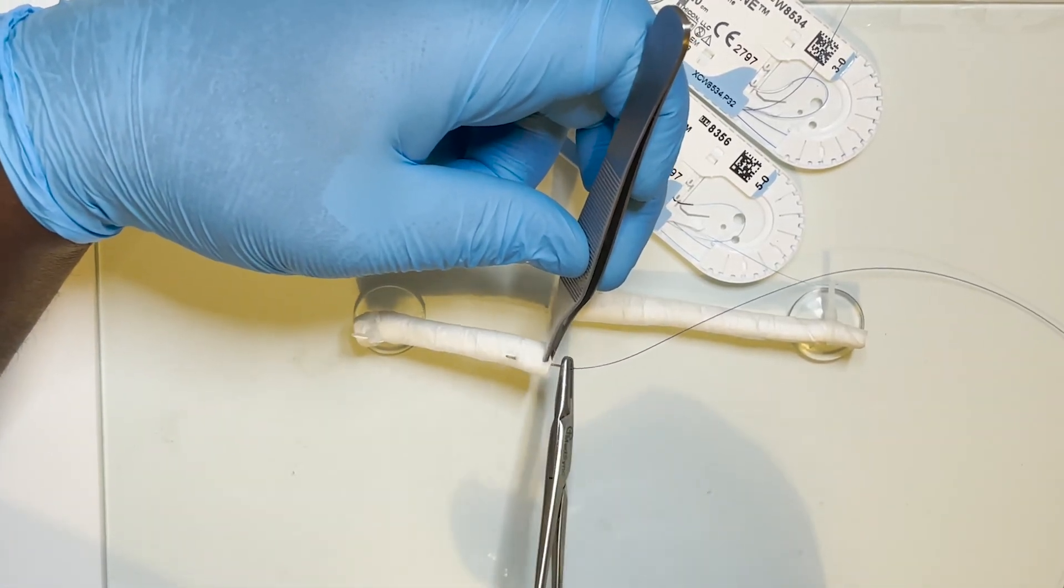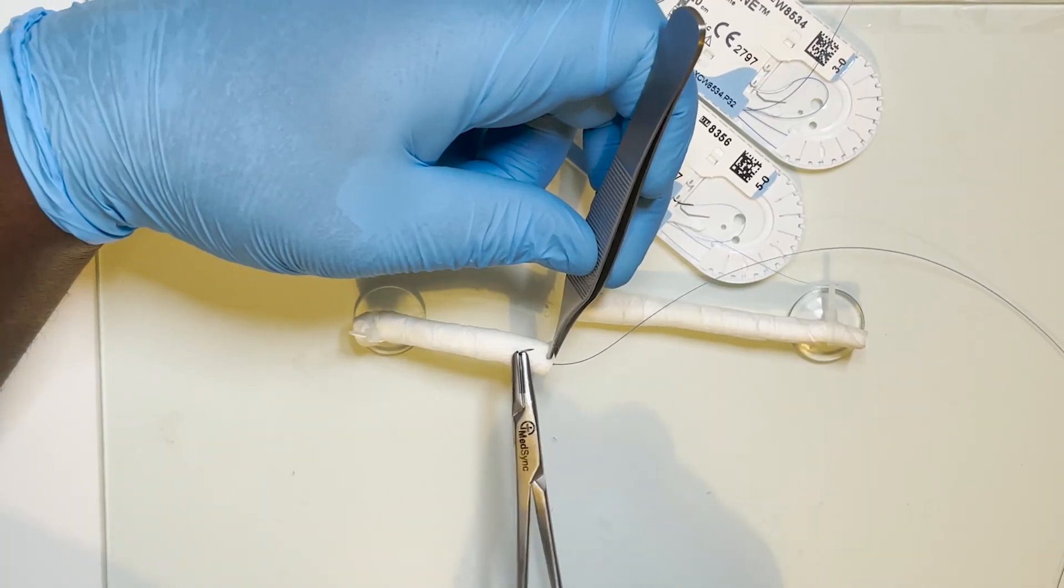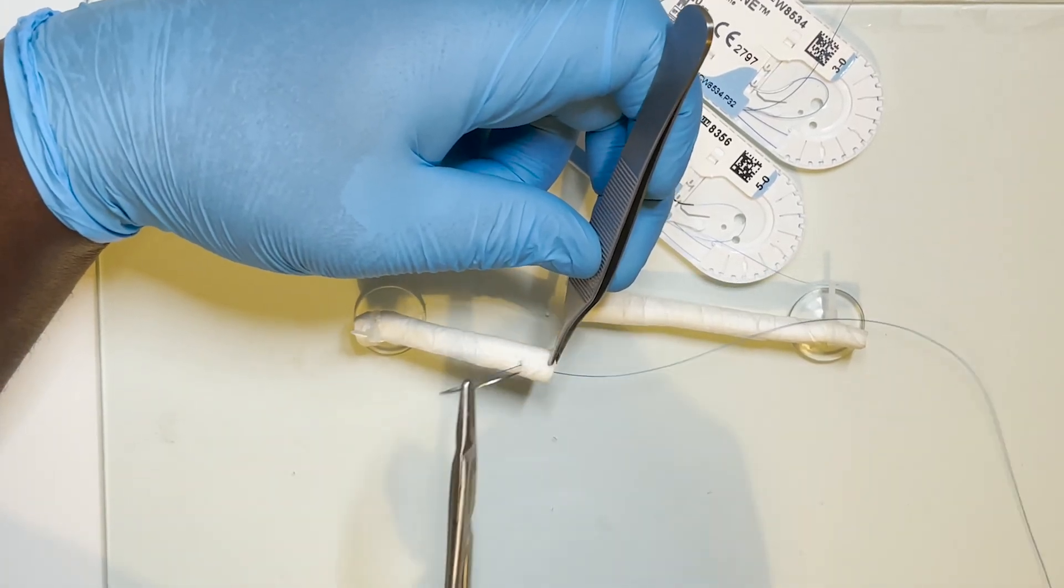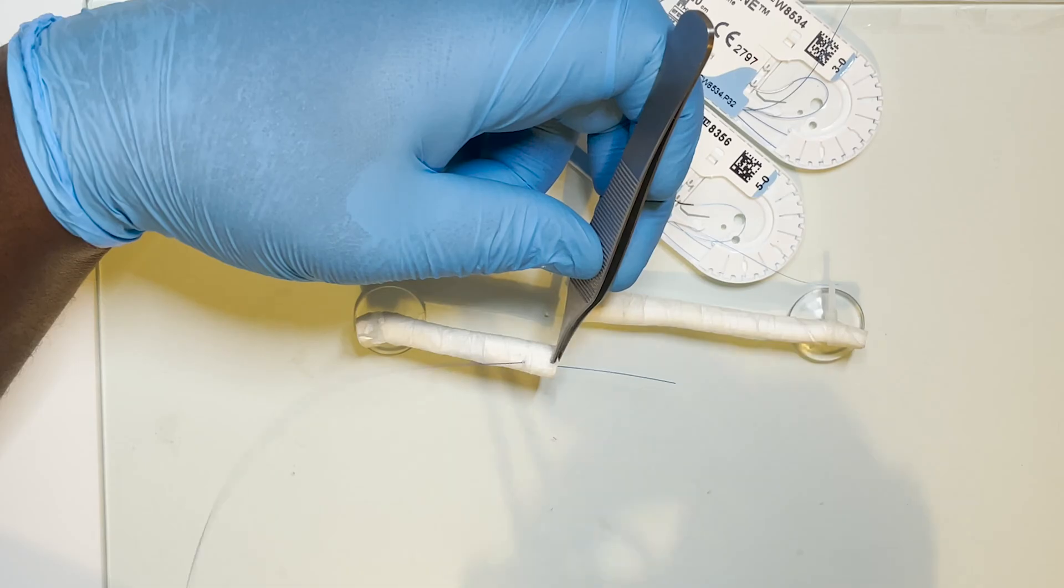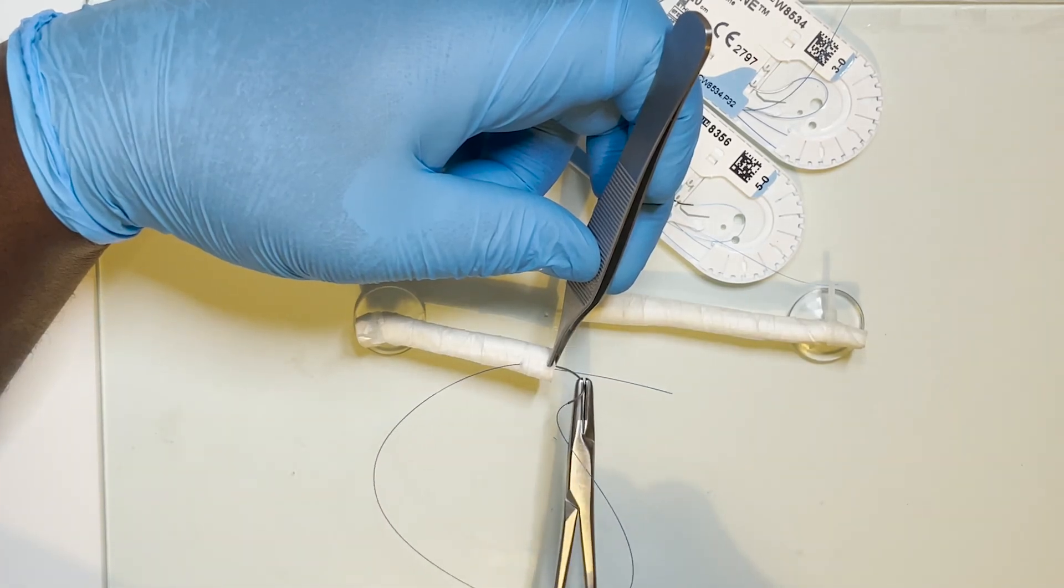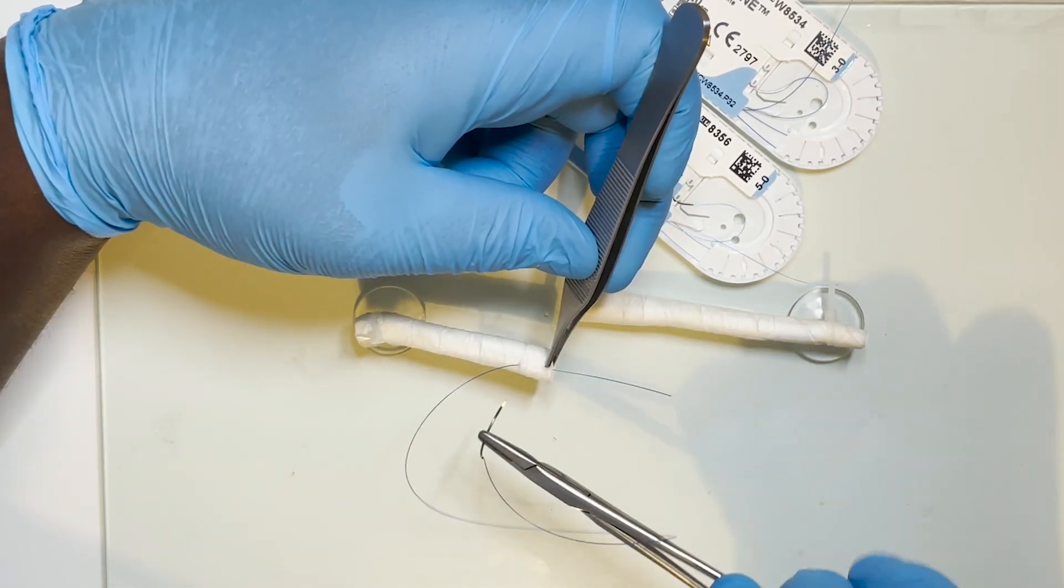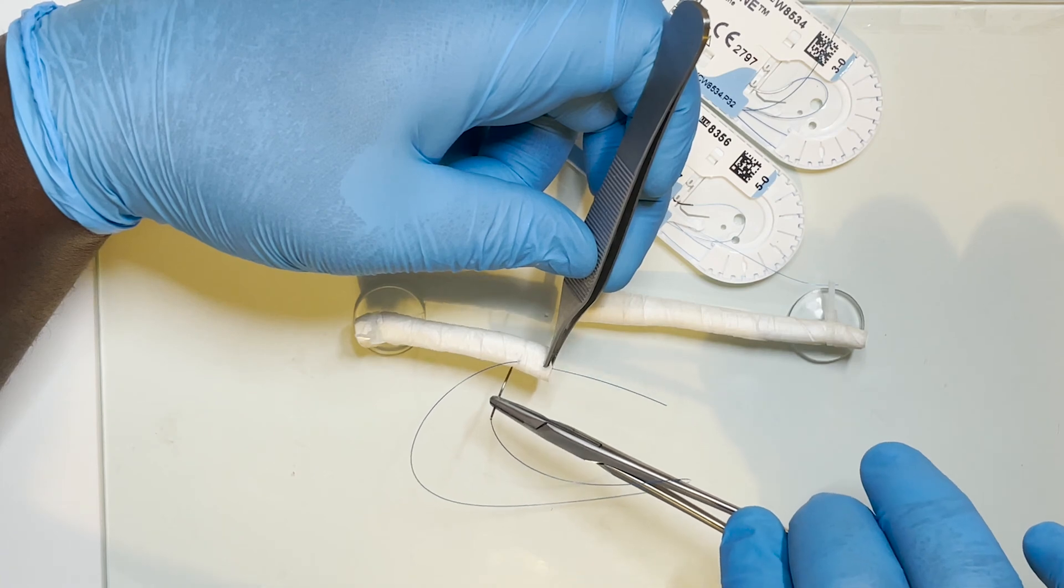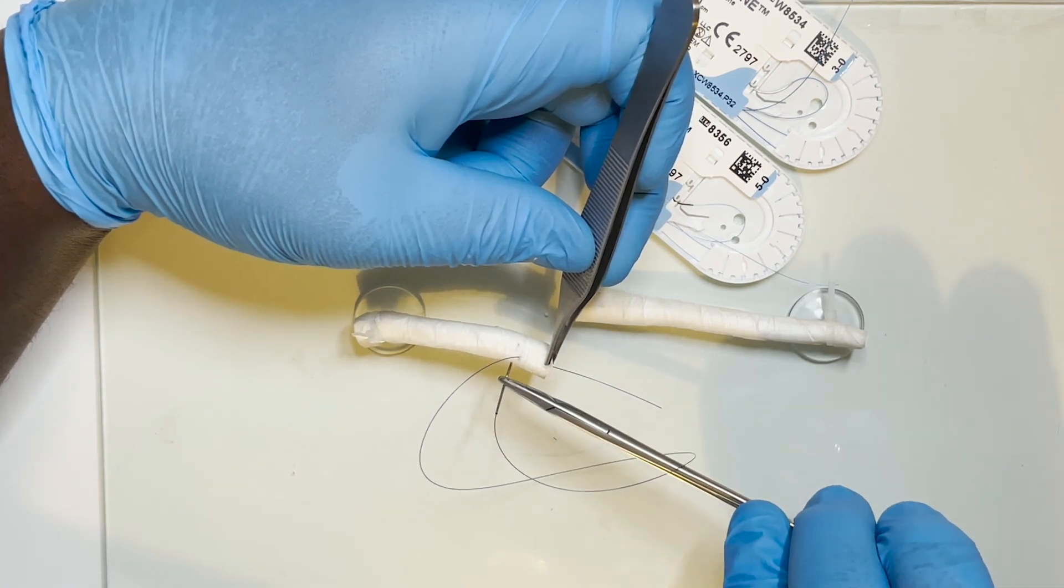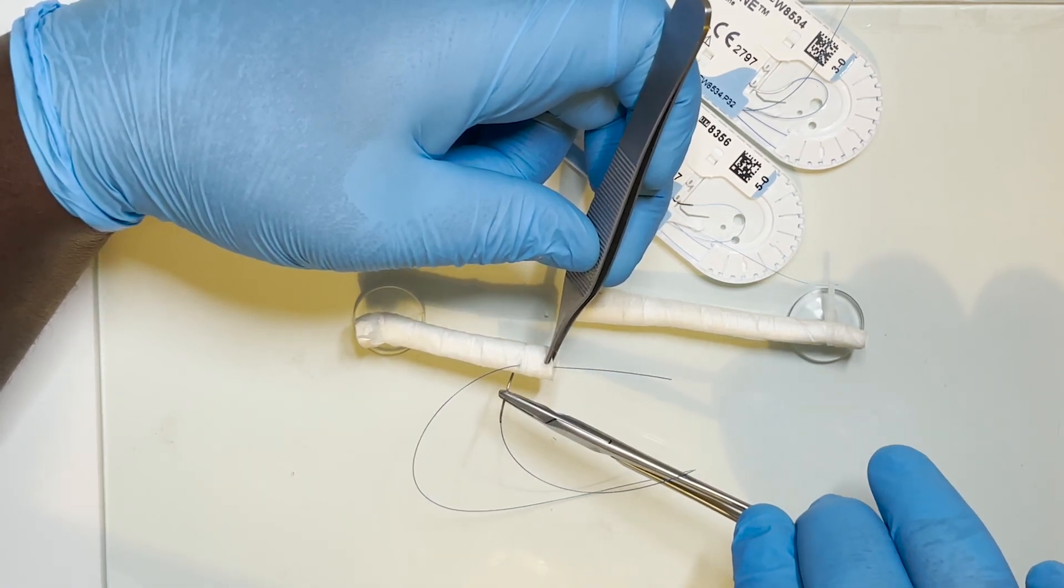You start with a longitudinal bite more medially in the tendon, exiting one centimeter from the site of division. This is followed by a transverse bite away from you, distal to the first.